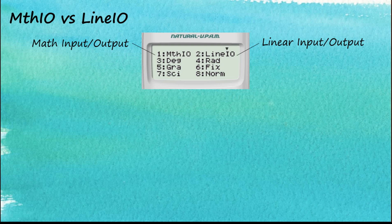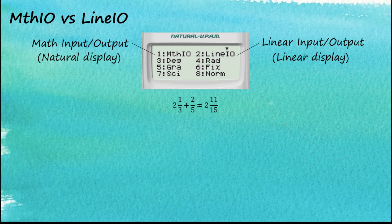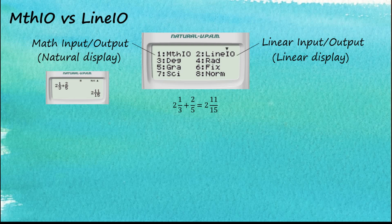MathIO is also called Natural Display, and LineIO is called Linear Display. For example, when calculating fractions, Natural Display shows the input and output in exactly the same format that we use when we write mathematics — symbols and equations. For Linear Display, it looks a little bit different — the input and output appear differently.